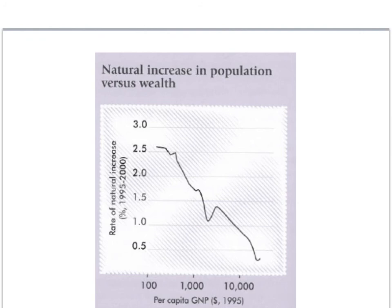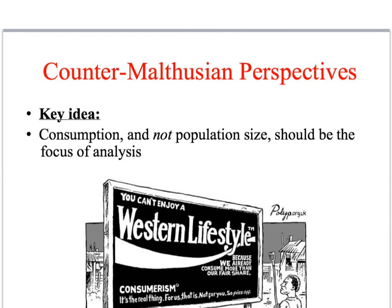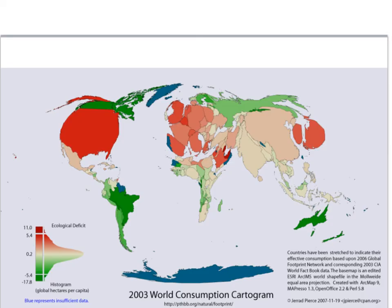In other words, a high birth rate might be a response to poverty, not its underlying cause. As countries become wealthier, the rate of population increase declines. Finally, some sociologists argue that population isn't really the problem at all — instead, there are enough resources to go around, but the problem is that the rich world consumes more than its fair share. This map of the world, colour-coded by consumption levels, shows that countries in deep red are consuming far in excess of a fair share of the world's resources. So whilst famines affect some poorer regions of the world, the rich world is panicking about an impending crisis of obesity.